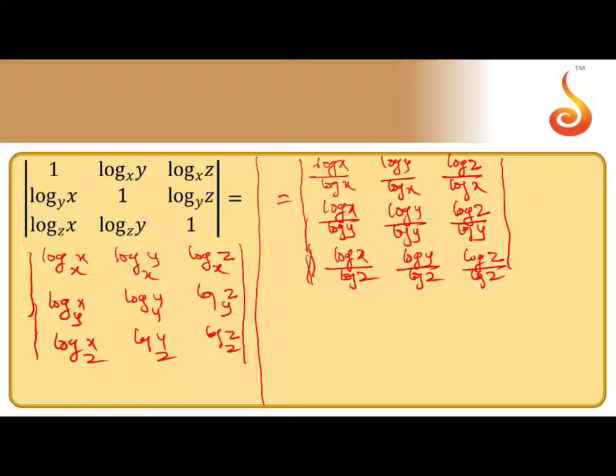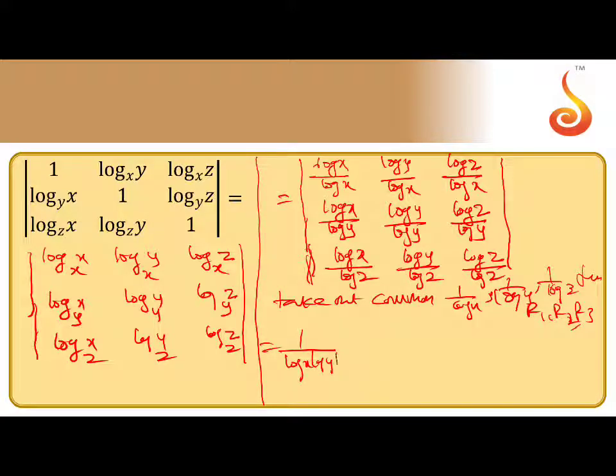So almost completed. We can take out common. Take out common: 1 by log x, 1 by log y, 1 by log z from R1, R2, R3. So 1 by log x, log y, log z. Because here, first row 1 by log x, second row 1 by log y, third row 1 by log z.